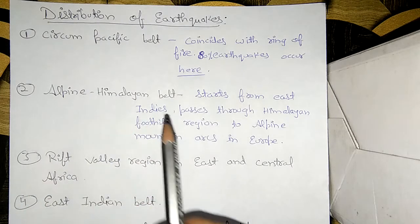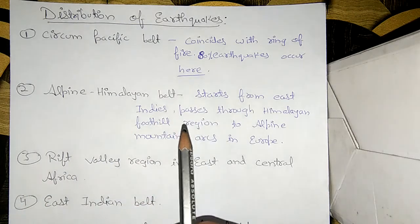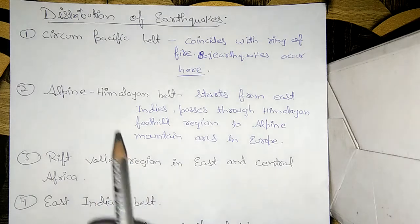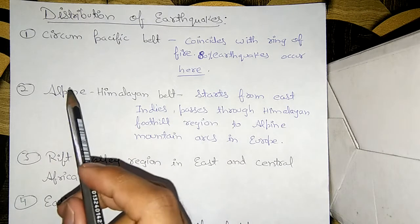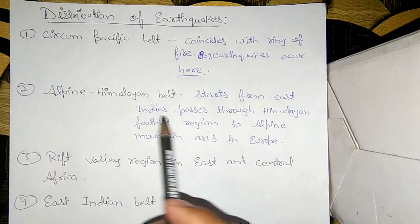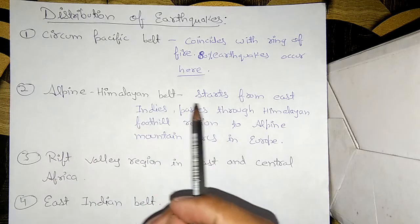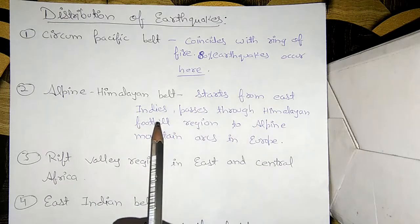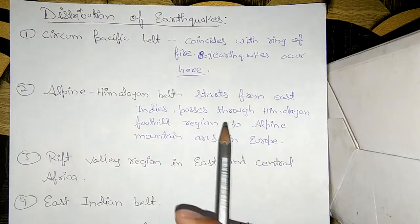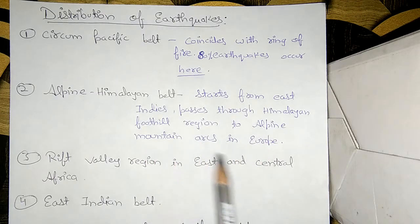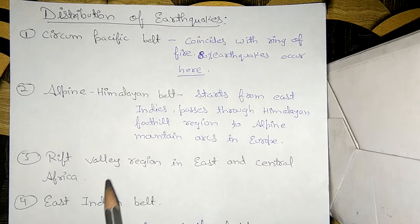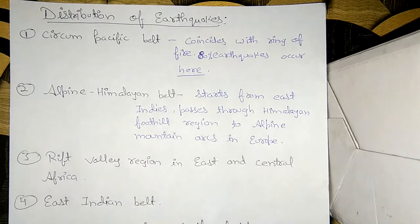The second belt is the Alpine Himalayan Belt. As the name suggests, it involves two mountain regions — the Alpine and the Himalayan. This belt starts from the East Indies, passes through the Himalayan foothill region, and extends to the Alpine mountain arcs in Europe.